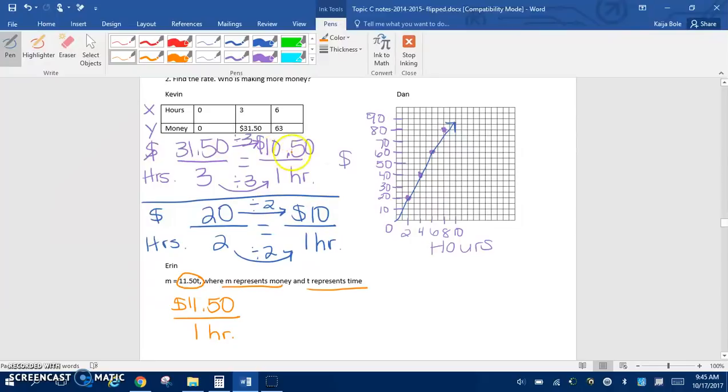So if we compare all three of these rates, we can see that Aaron is making the most money per hour. Alright. And that's all for this. So that only new part is the equation part. So if you have any questions, just bring those to class tomorrow and we will work on some more examples.